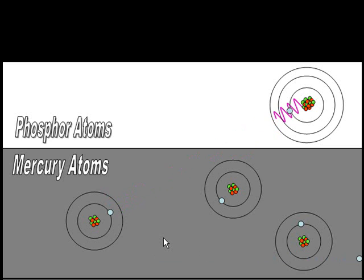This then collides with an electron in the phosphor atoms which becomes excited, and when it drops back down again it produces photons of light energy.